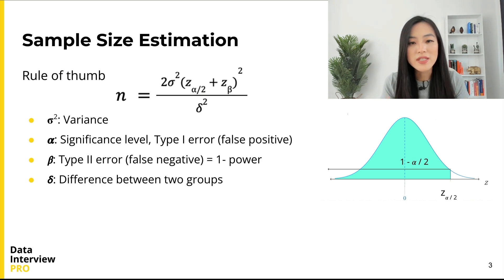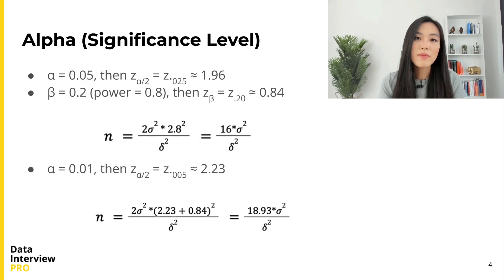Even though it's not required to know exactly how to derive the equation, it's helpful to understand how we obtain each component and how each component plays a part in estimating the sample size. When α is 0.05 and β is 0.2, we can get the rule of thumb formula, which is 16 multiplied by σ² divided by δ².